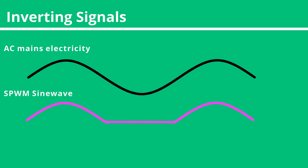You'll probably notice that there's only one half of the sine wave here, and if you've ever looked at mains electricity, it does in fact have both halves of the sine wave — the positive and negative. So what we need to do to fix this is create a single-phase inverter.